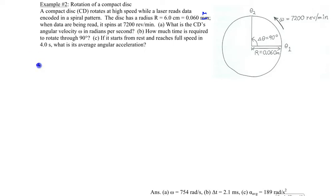For part A, it's a unit conversion problem. You're given the angular speed as 7200 revolutions per minute, but we want an answer in radians per second. So we need to convert revolutions to radians and minutes to seconds.